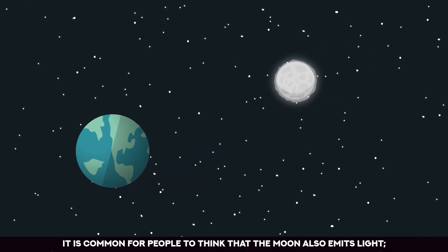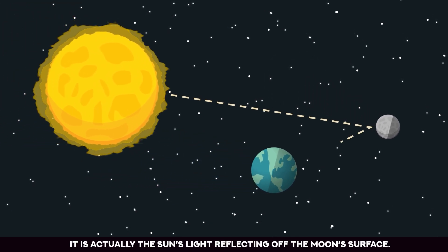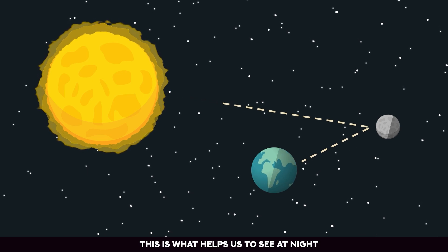It is common for people to think that the Moon also emits light. However, this is incorrect. Although the Moon can look bright too, it is actually the Sun's light reflecting off the Moon's surface. This is what helps us to see at night.